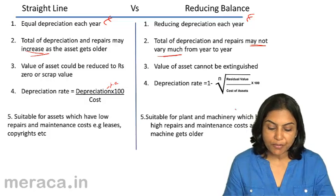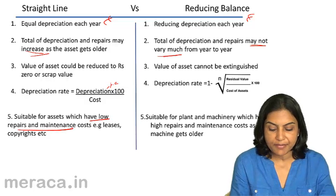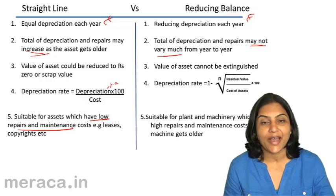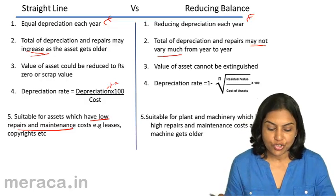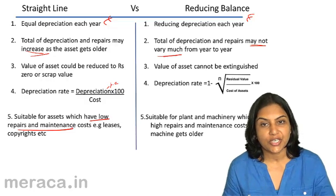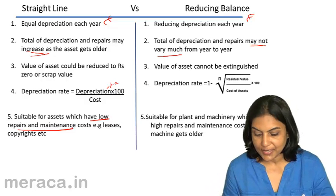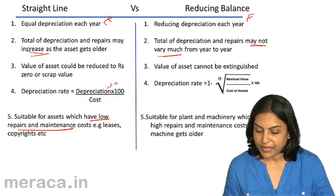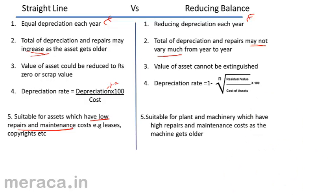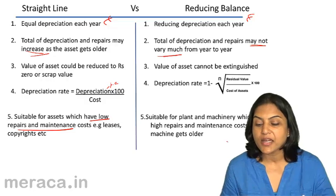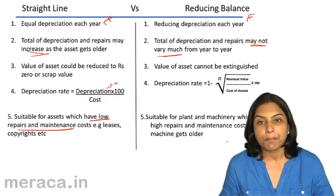The straight line method is suitable for assets which have low repairs and maintenance — for example, leases and copyrights which do not have any repairs expenditure — so it is fair to charge an equal amount of depreciation each year, as there is no other cost of using the asset. However, the reducing balance or written down value method is more suitable for plant and machinery which have high repairs and maintenance as the machine gets older, so that the total cost of using the machine — that is repairs plus depreciation — may more or less remain uniform year after year. This in brief is a comparison between the straight line and reducing balance methods of computing depreciation.